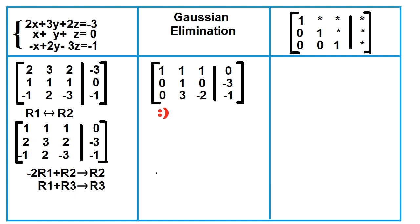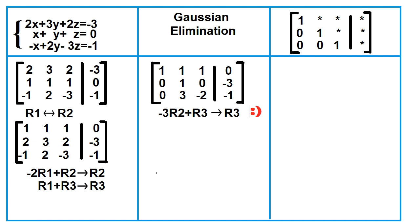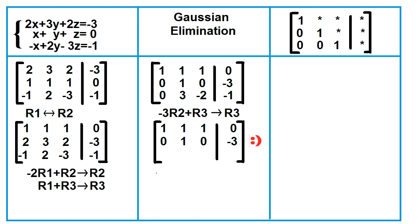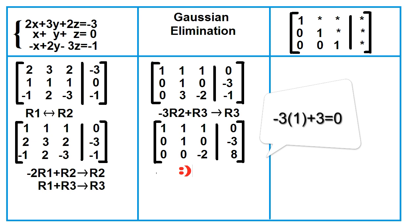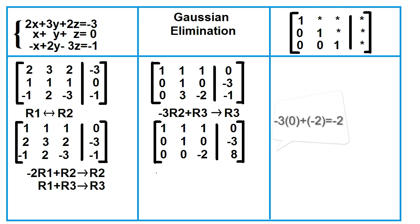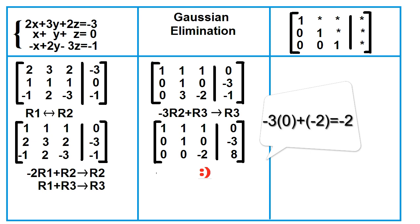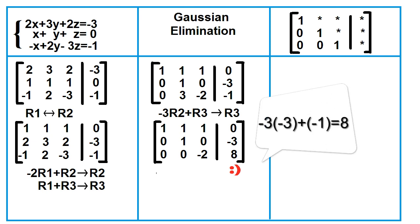Let's proceed to column 2. Since row 2, column 2 is already 1, let's make row 3, column 2 equal to 0. Replace row 3 with the product of negative 3 and R2 plus R3. Copy rows 1 and 2. Negative 3 times 0 plus 0 equals 0; negative 3 times 1 is negative 3, plus 3 is 0; negative 3 times 0 is 0, plus negative 2 is negative 2. Negative 3 times negative 3 is 9, plus negative 1 is 8.